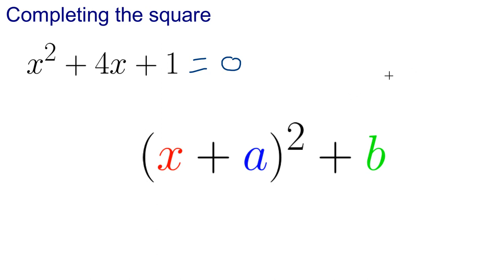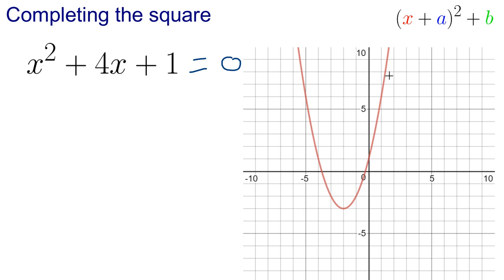So this is a graph of this expression, x squared plus 4x plus 1, and the minimum point is this point down here, the lowest point on the curve.